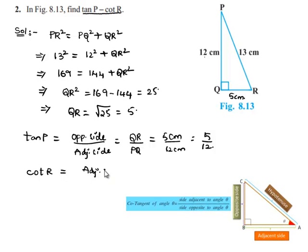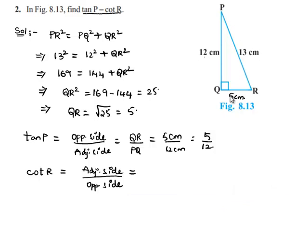Now let us find the value of cot R. We know that cot of an angle is adjacent side by opposite side. The side adjacent to R is QR and the side opposite to angle R is PQ, so cot R equals QR over PQ equals 5 centimeters by 12 centimeters, which is 5 by 12.